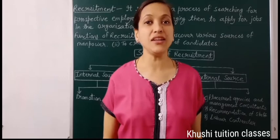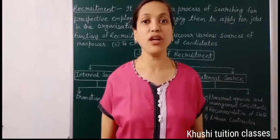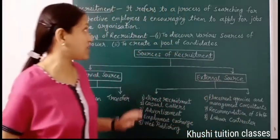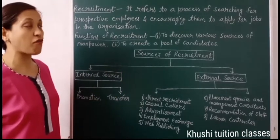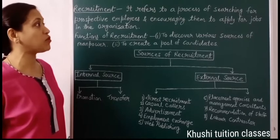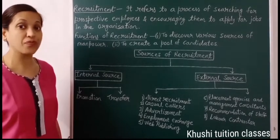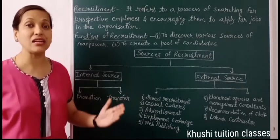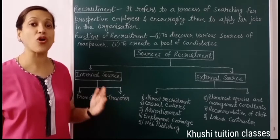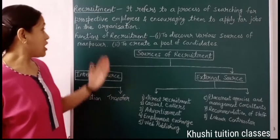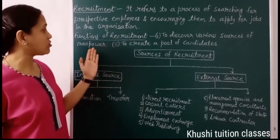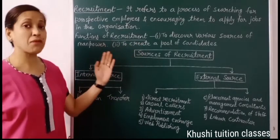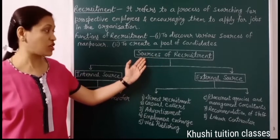Good morning friends. We will study in detail the three main aspects or components of staffing, i.e., recruitment, selection and training. We start with recruitment. Recruitment refers to a process of searching for prospective employees and encouraging them to apply for jobs in the organization. It is the second step in the staffing process, where prospective candidates are encouraged to apply for our organization's work and posts. The functions of recruitment are to discover various sources of manpower and to create a pool of candidates.